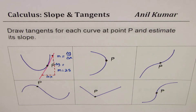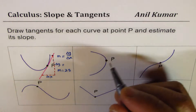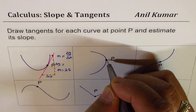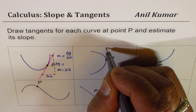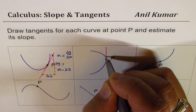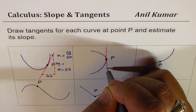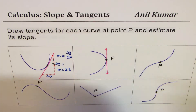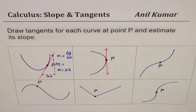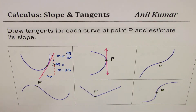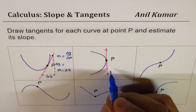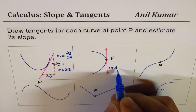Now let's look at the next curve. The point is right at the tip, so if I draw a tangent line it will be a vertical line. The slope of a vertical line is undefined, so we have undefined slope here.